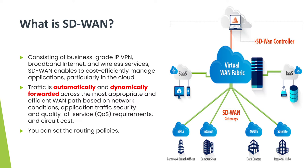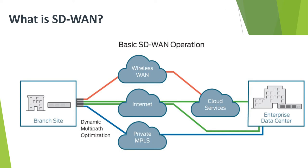As we can see in the diagram, the basic SD-WAN operation: we can see there is a branch site. We are having certain transfer mediums like a wireless wide area network, then an internet which is an open network, and then a private MPLS. Basically we are having multiple paths through which traffic can be sent, and then there will be an SD-WAN device which can be used for dynamic multi-path optimization.